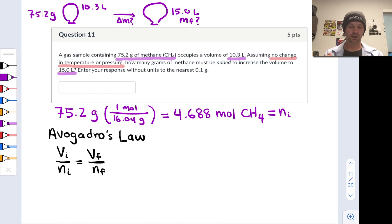We know the initial volume, that's 10.3 liters. We know the initial number of moles, that's 4.688 moles. That ratio is constant at constant pressure and temperature. We know our target final volume is 15 liters, and the only unknown remaining is n final.